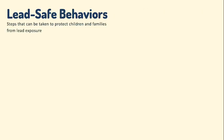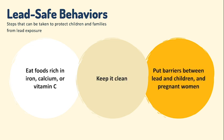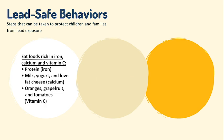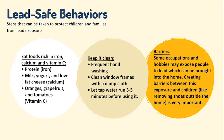Practicing lead-safe behaviors is a great way to prevent exposure. Eating foods rich in iron, calcium, and vitamin C helps decrease the absorption of lead into the body. Frequent hand-washing and cleaning of window frames and floors eliminates one of the main avenues for lead dust exposure. If people have lead plumbing pipes in their homes, they can let the tap run for three to five minutes before using it to flush out lead-contaminated water. Some occupations and hobbies may expose people to lead, which can be brought into the home, so creating barriers such as removing shoes outside the home is very important.